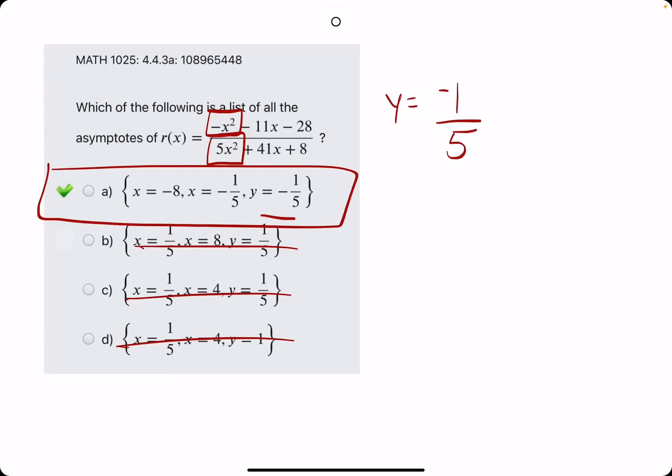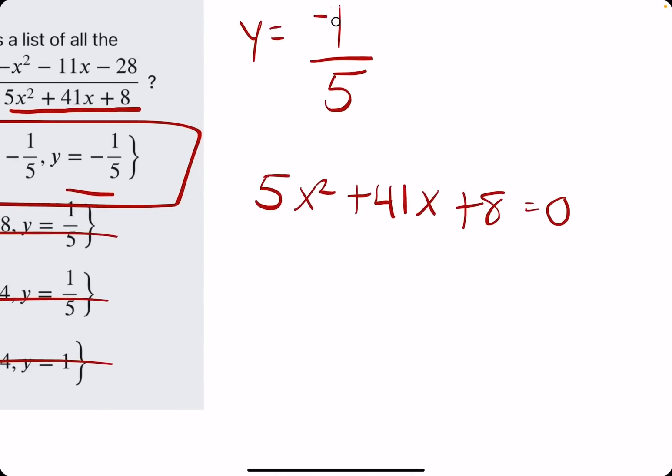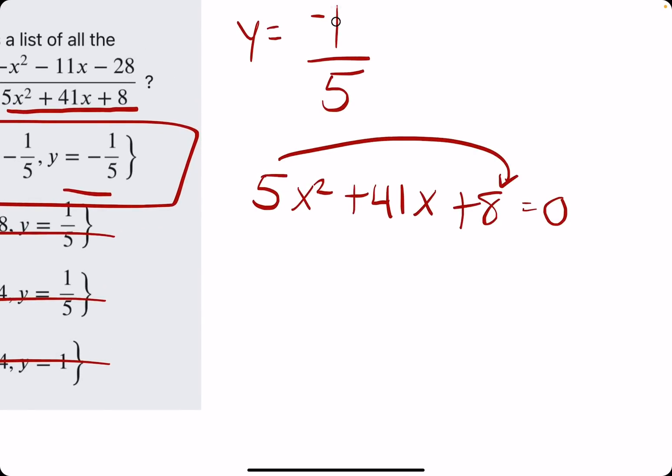Let's talk about why negative 8 and negative 1 fifth are the vertical asymptotes. In the last one we talked about when it was in factored form, we would set each of those factors equal to 0 and solve for x. And really, that's still the same technique, except it's not factored already. So, the objective would be to set the denominator equal to 0 and solve it by factoring.